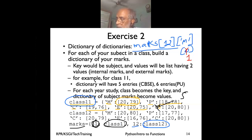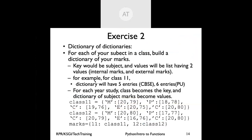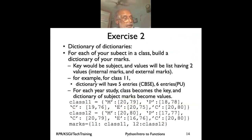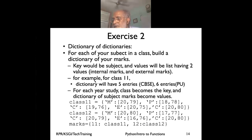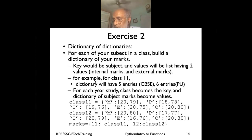You can make a dictionary of dictionaries, dictionary of lists, or any nested combination - there is no limit. The double-bracket access marks[12]['m'] is different from two-dimensional array notation; Python doesn't have native 2D arrays in basic form - you implement them as a list of lists. For numpy arrays you do have multidimensional arrays, but in basic Python it's nested data structures.